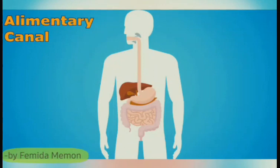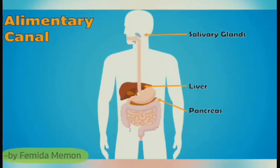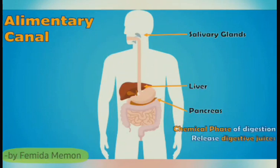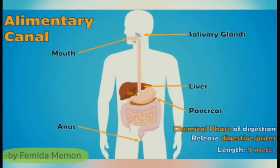However, accessory digestive organs such as salivary glands, liver, and pancreas are located outside the alimentary canal. These accessory organs contribute to the chemical phase of digestion by releasing digestive juices. The alimentary canal begins at the mouth and extends to the anus with an average length of about 9 meters.